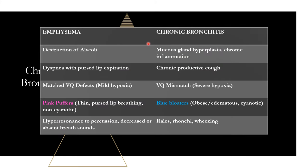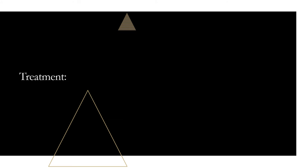Let's do a quick comparison. Emphysema is all about the alveoli; chronic bronchitis is about mucus and chronic inflammation. Emphysema: dyspnea with pursed lip breathing; chronic bronchitis: chronic productive cough with sputum. Emphysema: matched VQ defects, mild hypoxia, pink puffers — thin, pursed lip breathing, non-cyanotic. Chronic bronchitis: blue bloaters — right-sided heart failure, edematous, cyanotic, obese. Emphysema auscultation: hyperresonance, decreased or absent breath sounds. Chronic bronchitis: crackles, rhonchi, wheezing. These can coexist, but for the exams they're generally separated.